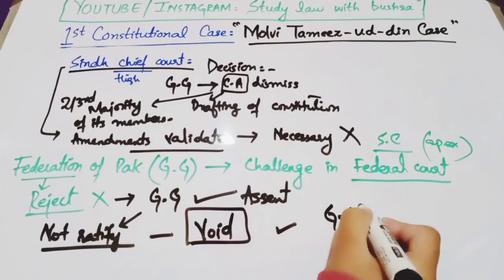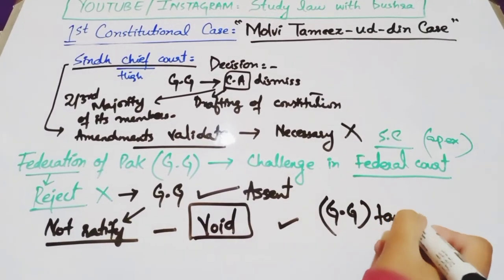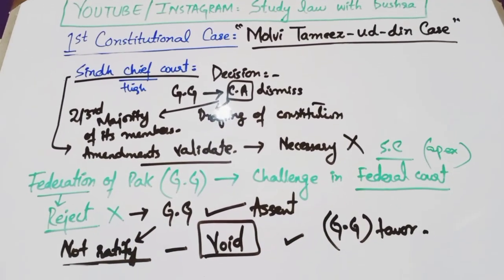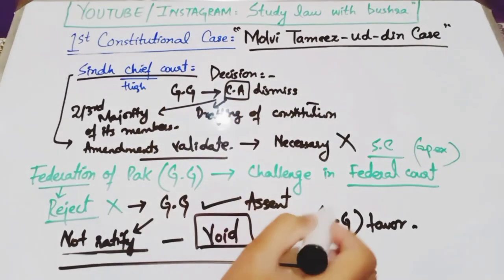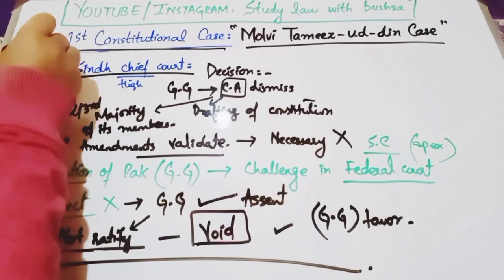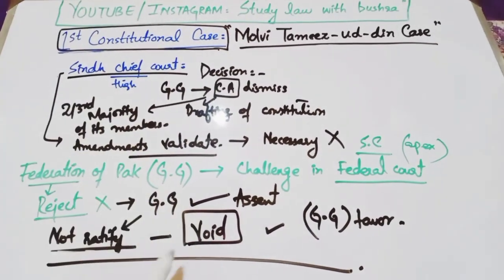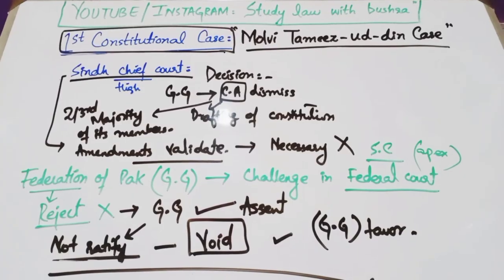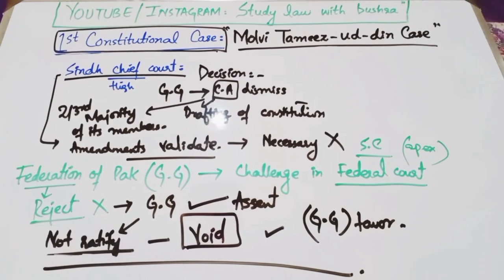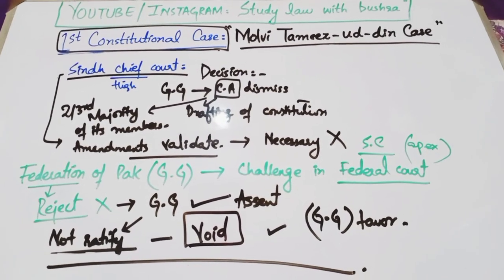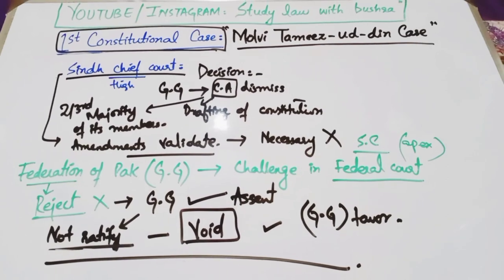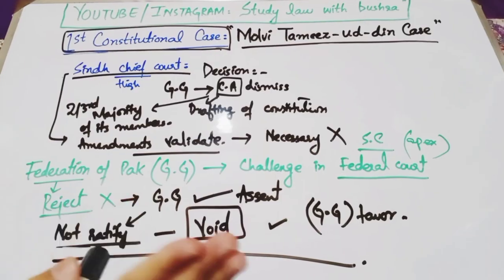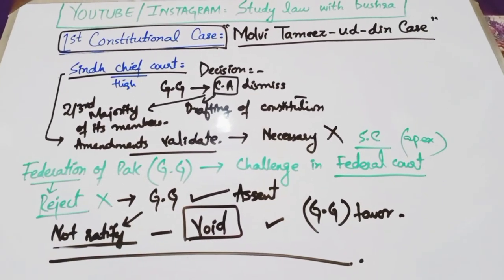Federal Court of Pakistan نے فیصلہ governor general کے حق میں دیا — یہ تھا مولوی تمیز الدین کا پورا case۔ یہ بہت important case ہے اور Pakistan کا first constitutional case ہے، جس کی basic history آپ کو معلوم ہونی چاہیے۔ اگر آپ کو ویڈیو اچھی لگی تو like کریں، comments میں feedback دیں، اور subscribe کرنا نہ بھولیں — شکریہ، اللہ حافظ۔